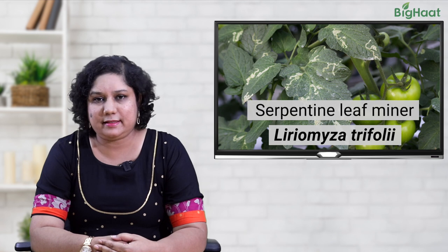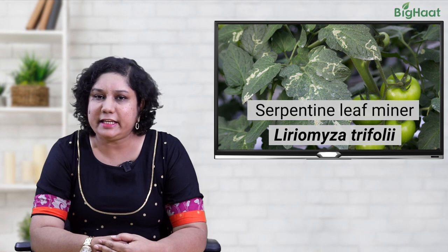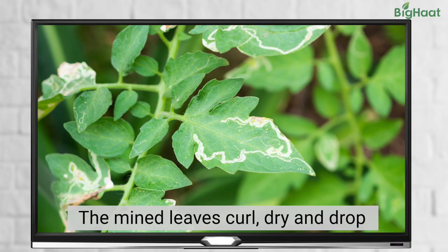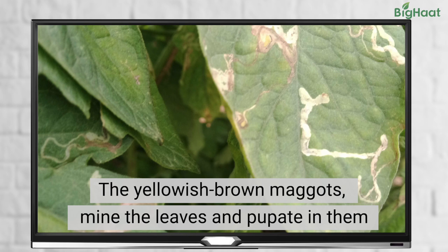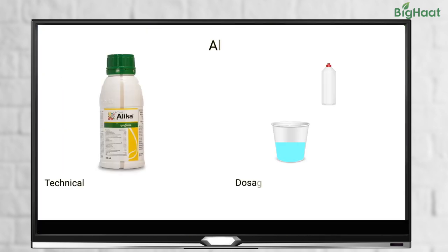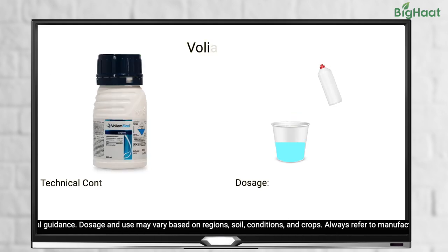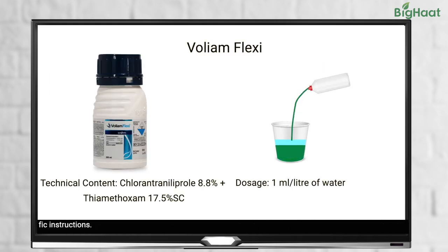Next on our list are serpentine leaf miners. These, as the name suggests, leave a serpentine appearance on the leaves. These mined leaves later curl, dry and drop. The yellowish brown maggots of the miners can mine into the leaves and pupate inside the mines. To control serpentine leaf miners, use 1 ml of Alica or Volume Flexi insecticide mixed in a litre of water.